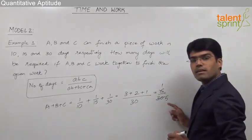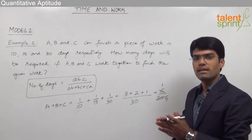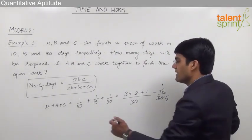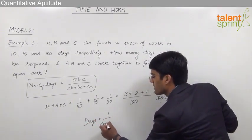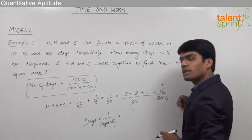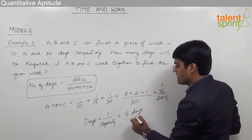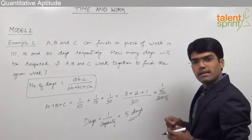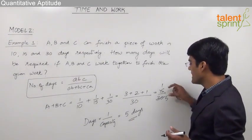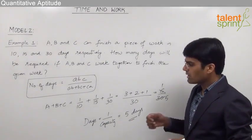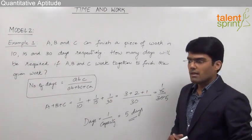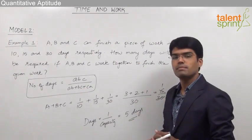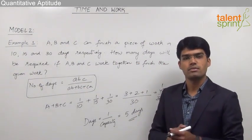Since capacity is the reciprocal of number of days, reciprocating 1/5 gives us 5 days. So when A, B and C work together, the total number of days required is 5. You can either find the total capacity when persons work together and take its inverse, or substitute values directly into the formula — though substituting into the formula can sometimes become complicated.